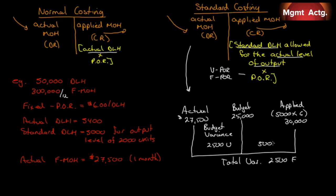To get the total variance of $2,500 favorable, the volume variance must be $5,000 favorable. But be careful: this diagram looks like the ones we drew for direct materials, direct labor, and variable manufacturing overhead. For those, we went from actual × actual, to actual × standard, to standard × standard. For fixed manufacturing overhead, we go from actual compared with applied — not standard — because it's a fixed cost. We don't expect it to vary.